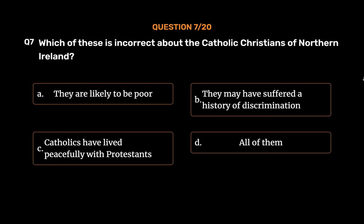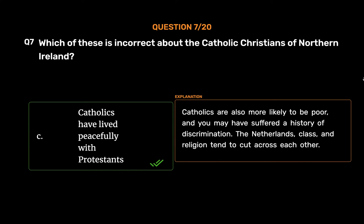The correct answer is Option C: Catholics have lived peacefully with Protestants. Catholics are more likely to be poor and may have suffered a history of discrimination. In the Netherlands, class and religion tend to cut across each other.